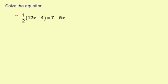When I multiply by 2 over here, it's going to eliminate the one-half. I'll just go ahead and write this out: 2 times one-half and then times 12x minus 4 equals 2 and then times the whole thing, 7 minus 5x.